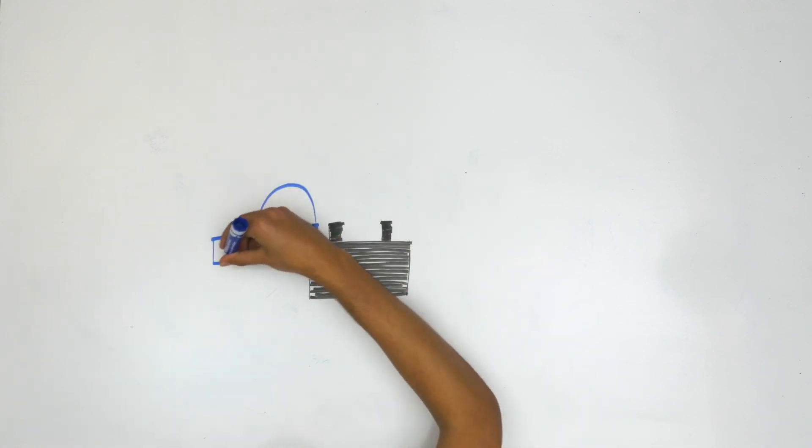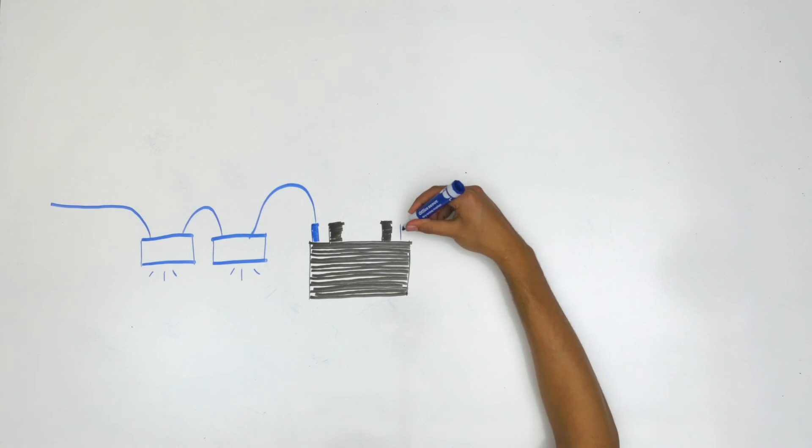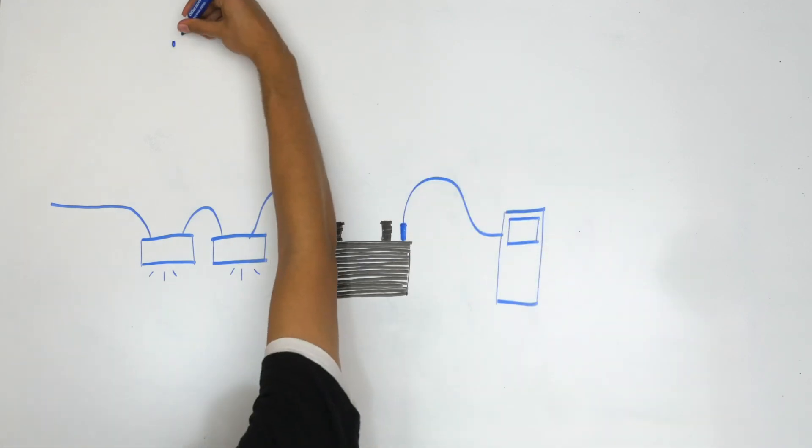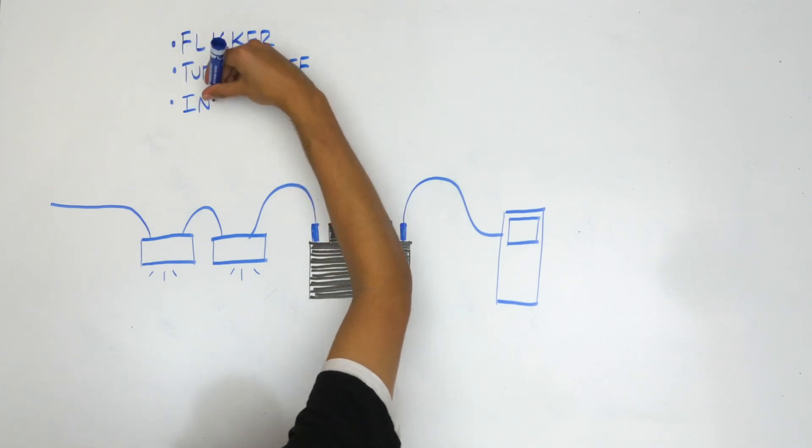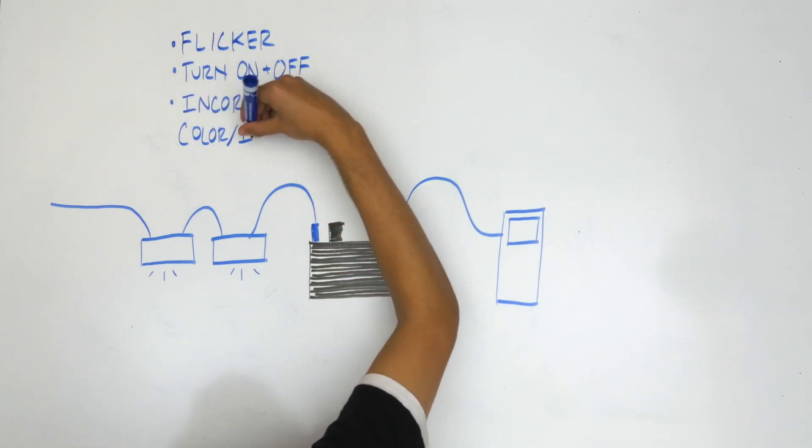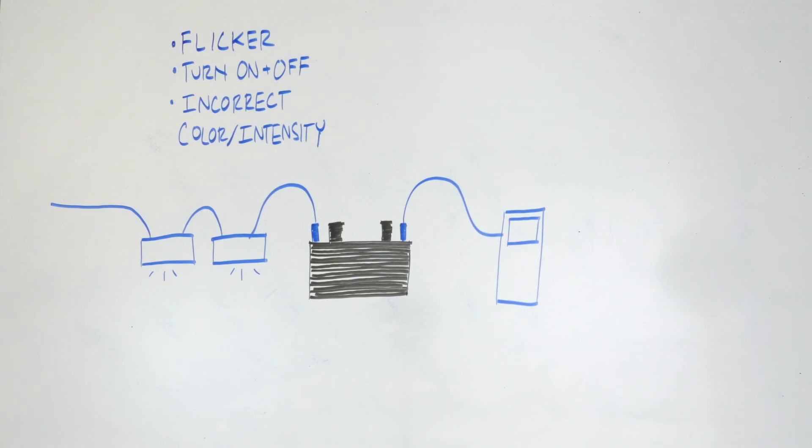If the A80 tuna blue is in a chain or connected to a controller and it flickers, turns on or off when it is not supposed to, or experiences incorrect shifts in color or intensity, you can diagnose the issue in the following way.